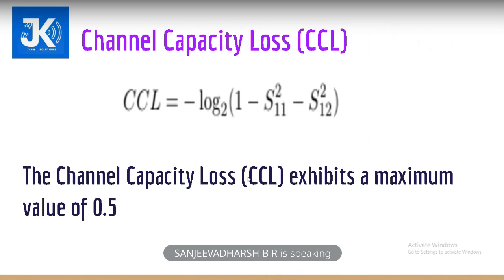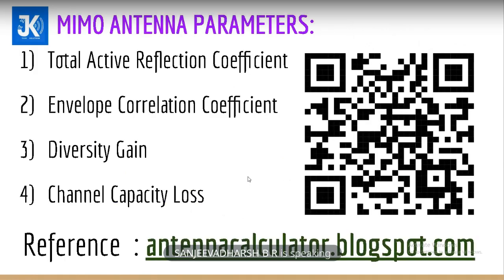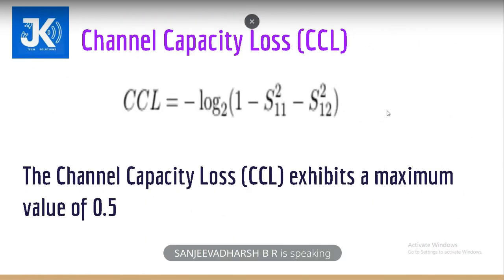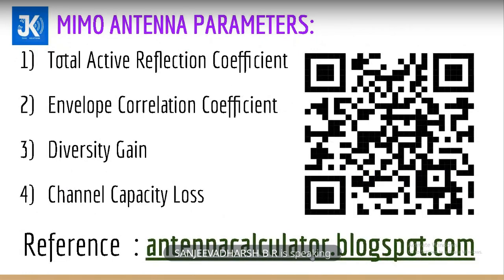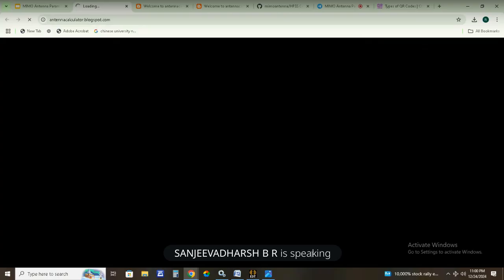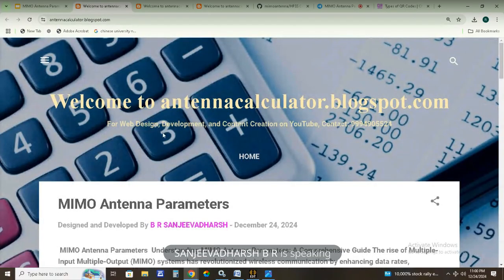Next is channel capacity loss. The formula is: CCL = −log base 2 of (1 − |S11|² − |S12|²). The maximum acceptable channel capacity loss value is 0.5. These are all the design parameters we have discussed, and now we can start with the simulation.